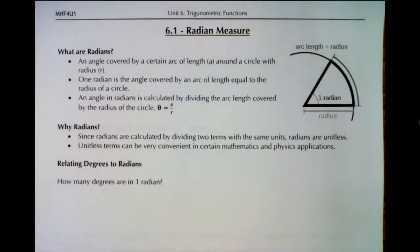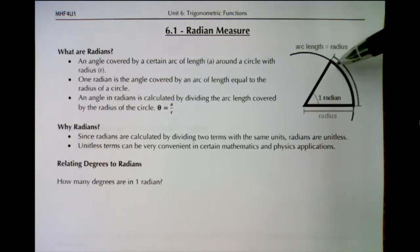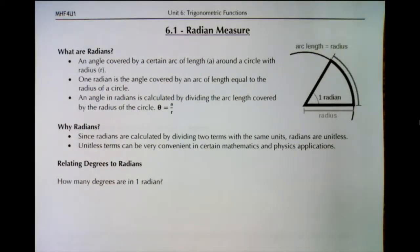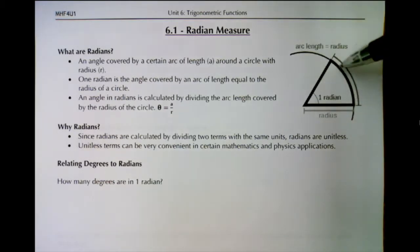This is lesson 6.1: radian measure. Radians are another way to determine an angle. Prior to this lesson we've defined angles in degrees, but radians is an entirely different way to measure an angle. The definition of one radian is the angle covered by an arc length in a circle with a defined radius. One radian is the arc length — the curved part of a circle — equal to the circle's own radius.